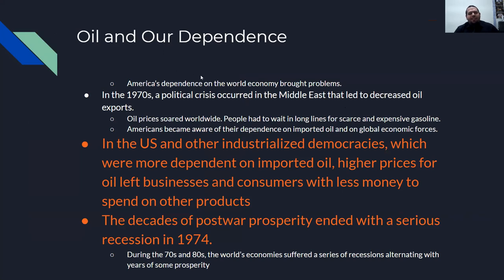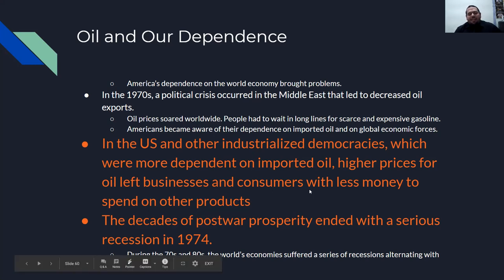Oil and our dependence: America's dependence on the world economy will also bring problems. In the 1970s, there was a political crisis in the Middle East that led to decreased oil exports to the United States. Oil prices soared worldwide, and people had to wait in long lines for scarce and expensive gasoline. Americans became aware of their dependence on imported oil and on global economic forces. In the U.S. and other industrialized democracies, higher oil prices left businesses and consumers with less money to spend on other products. The decades of post-war prosperity ended with a serious recession in 1974, and during the 70s and 80s, the world's economies suffered a series of recessions alternating with years of some prosperity.